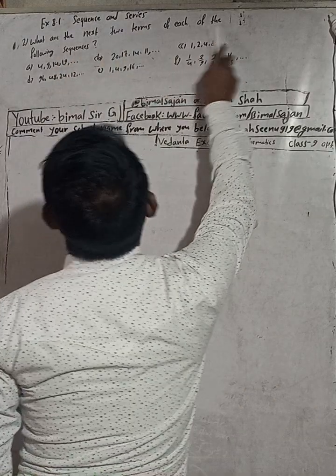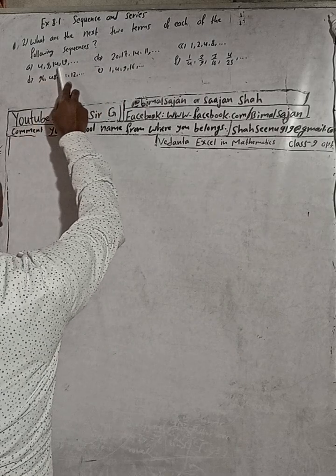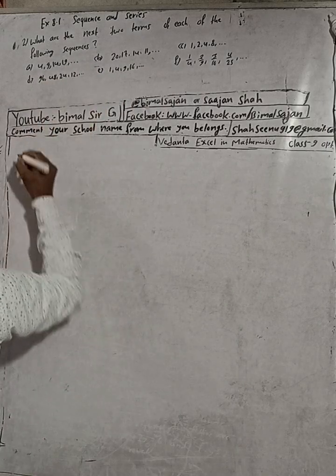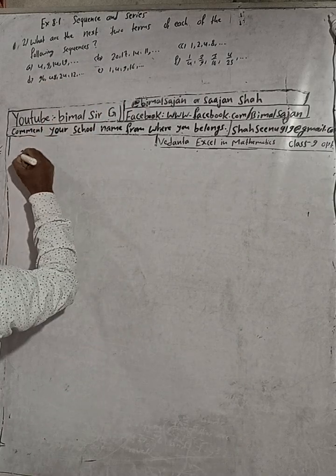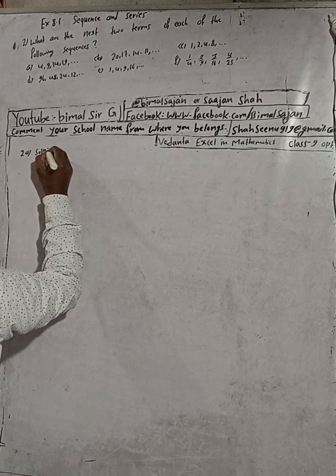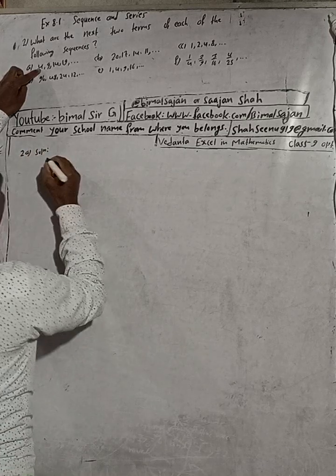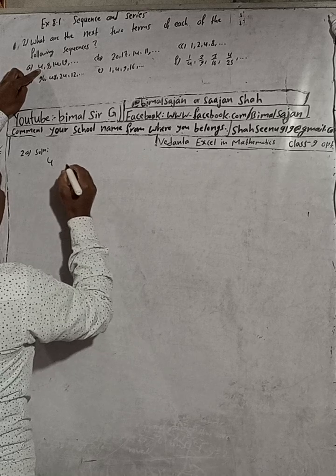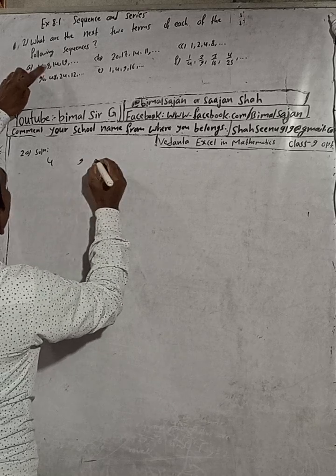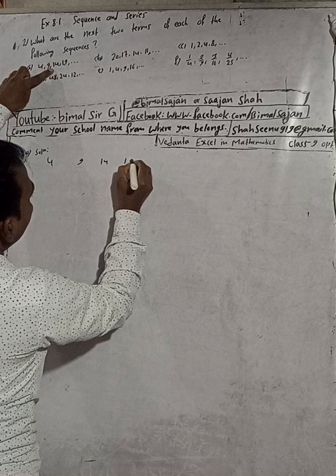What are the next two terms of each of the following sequences? Part (a): the sequence is 4, 9, 14, 19. Let's look at the solution. We can see here: 4, then 9, then 14, and then 19.